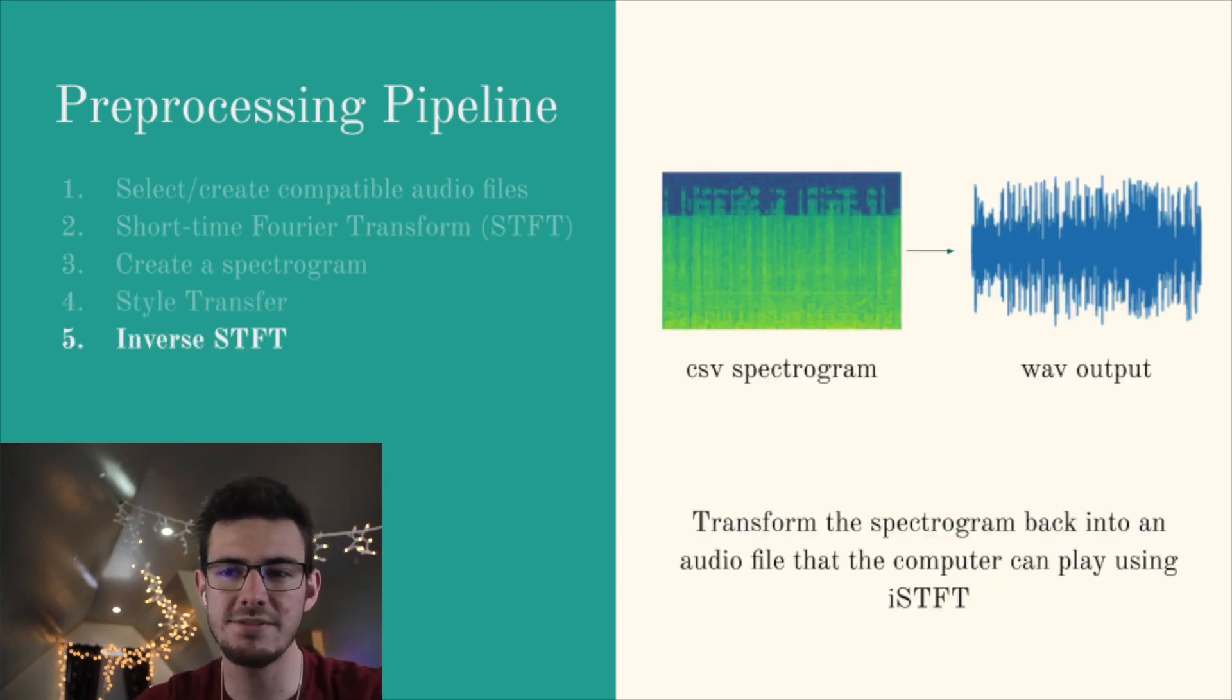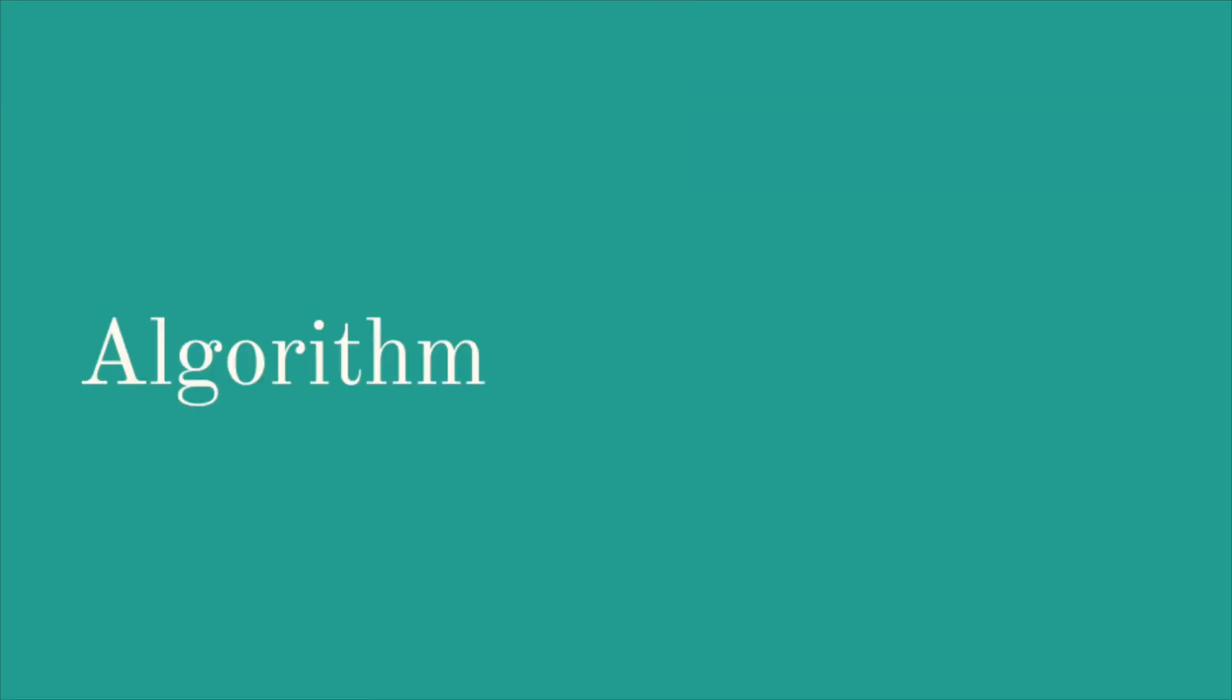Lastly, when we receive our style transferred spectrograms back from the machine learning models, we have a relatively simple step. We just have to convert our spectrogram back to an audio file that we can listen to. Since we created our original spectrograms using the STFT, we can use the inverse STFT function to transform the image back into a waveform. Once we do that, it's just a matter of saving the waveform as a wave file and listening to it. So now we'll quickly talk about the algorithm that we used.